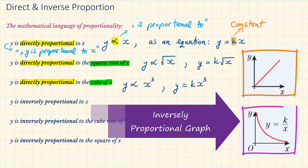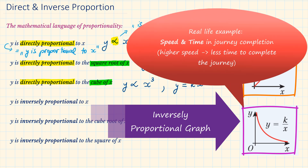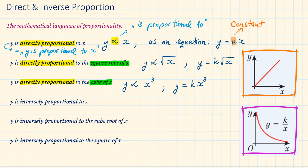When two quantities are inversely proportional, when one quantity increases the other one decreases at the same rate. We can also refer to these as being in reciprocal proportion, and this is how their graph looks like. An example from real life would be speed and time: as we increase our speed, the time to complete our journey will decrease.